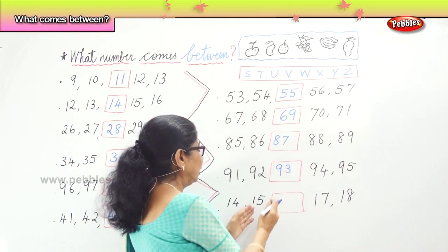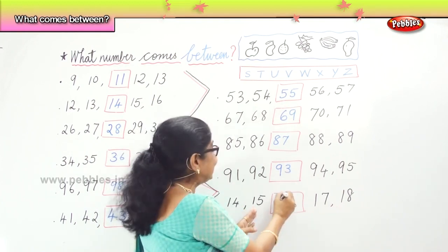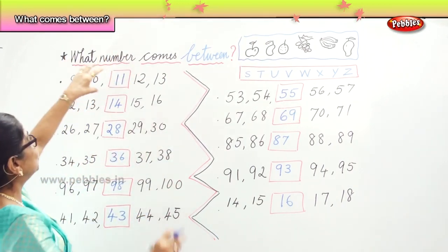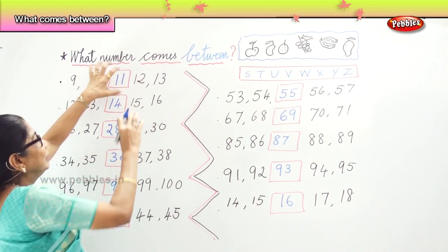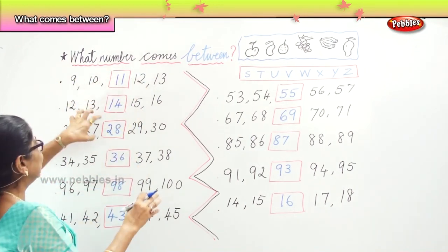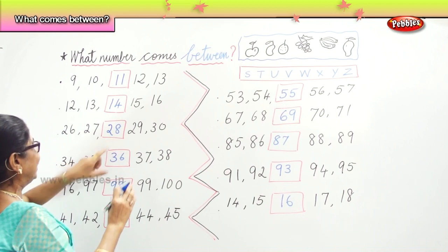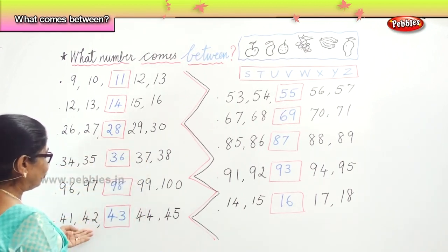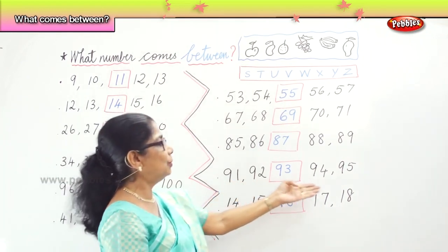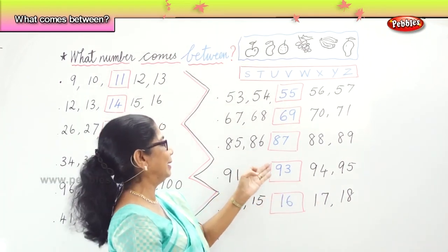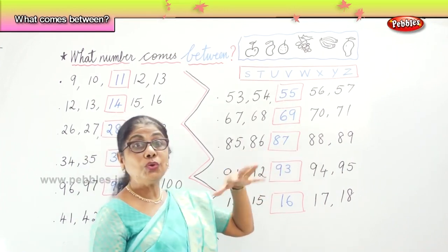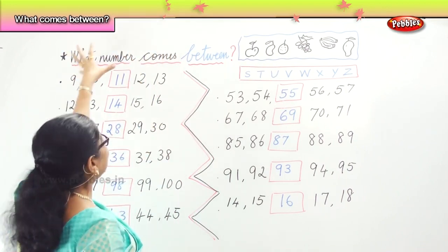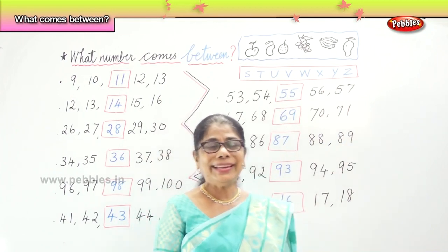Next: 15, __, 17 — 16. We learnt to write what number comes between. 10 and 12 — 11. 13 and 15 — 14. 27 and 29 — 28. 35 and 37 — 36. 97 and 99 — 98. 42 and 44 — 43. 92 and 94 — 93. 86 and 88. So we learnt to write and count in our mind and say what number comes between.